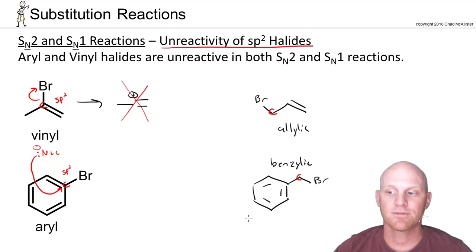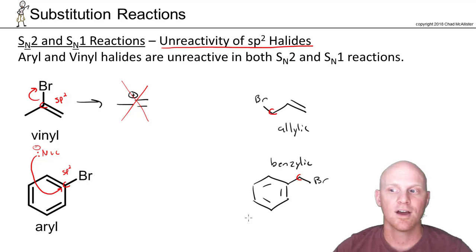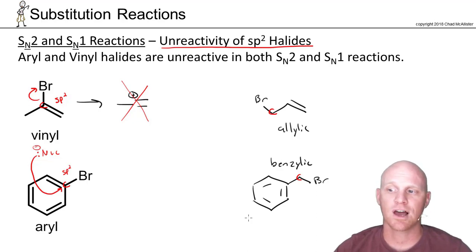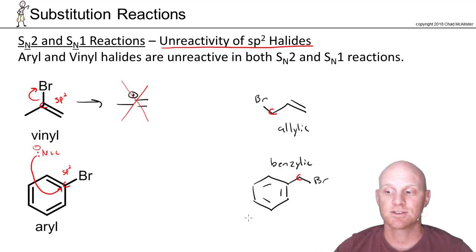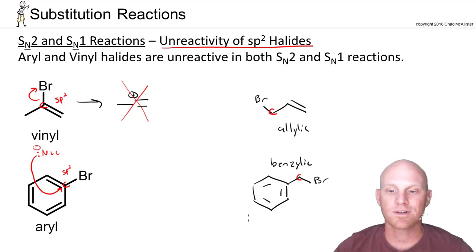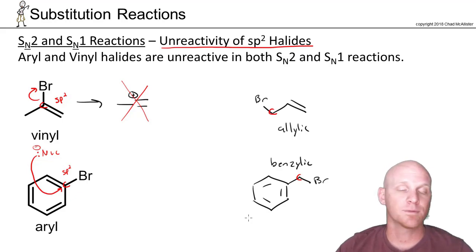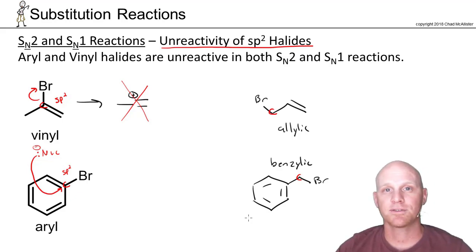Even for SN2, we don't form a carbocation and there's no resonance, but there will be some delocalization — some sideways overlap in the transition state that lowers its energy. So even for SN2, being allylic or benzylic is especially a good thing, an especially fast reaction, as long as it's not tertiary. So don't confuse vinyl with allylic, and don't confuse aryl with benzylic. One is completely unreactive, one is very reactive.